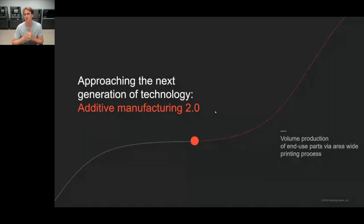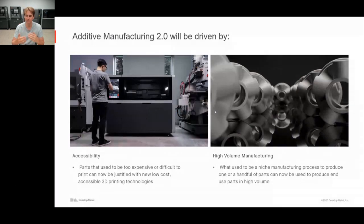AM 2.0 is really driven by two main themes. The first is accessibility — part costs and the ability to produce parts has become far more accessible and far easier. Parts that were too expensive or difficult to produce in the past can now be printed with new low-cost, easy-to-use metal 3D printing technologies.